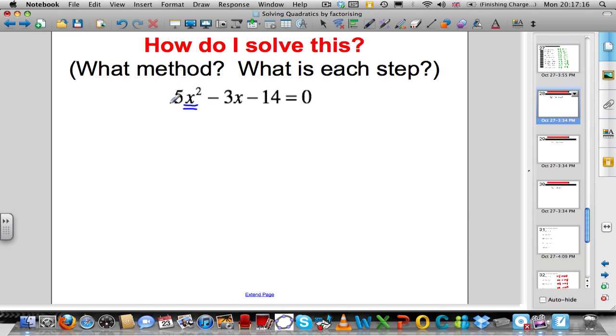Let me just remind you, the number in front of the x squared multiply it by the number term. So you do 5 multiplied by minus 14 and you get minus 70.